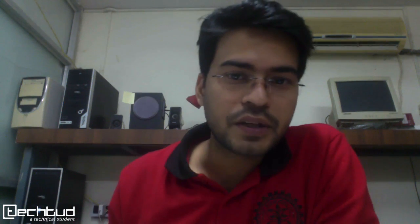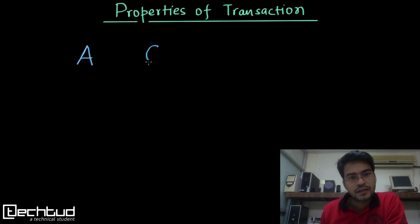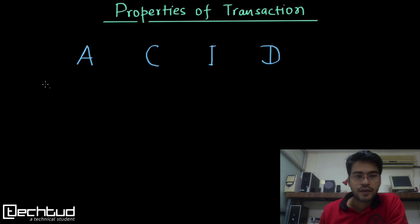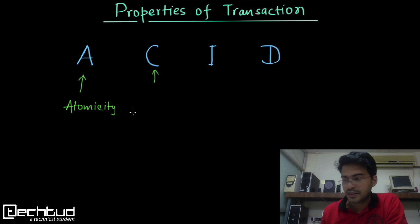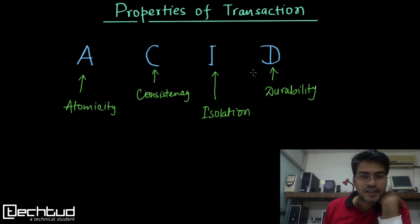So in this lecture, we will understand what are the basic essential properties of a database transaction. We call it ACID property. So what is ACID property? We have A, C, I, and D. Here A stands for atomicity, C stands for consistency, I stands for isolation, and D stands for durability. Now let's understand each property one by one.